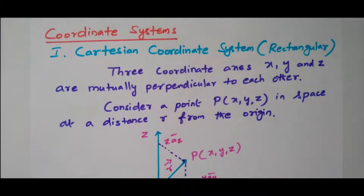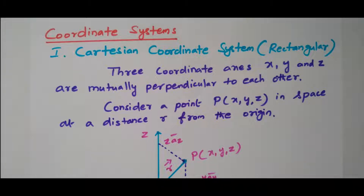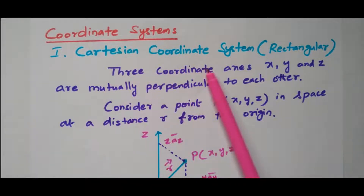Welcome viewers. In this video we will see the coordinate system. There are three types of coordinate systems available: Cartesian coordinate, spherical coordinate, and cylindrical coordinate system. First we will see the Cartesian coordinate system.